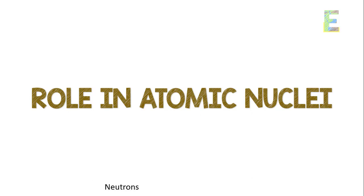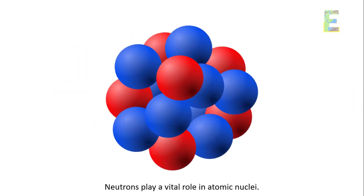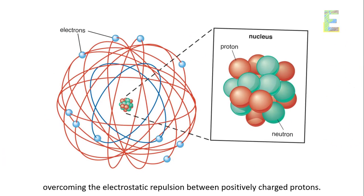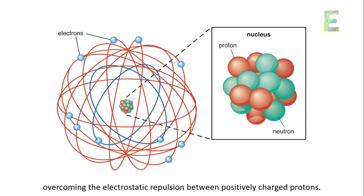Role in atomic nuclei. Neutrons play a vital role in atomic nuclei. They act as glue that helps bind protons together in the nucleus, overcoming the electrostatic repulsion between positively charged protons.